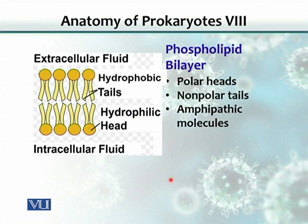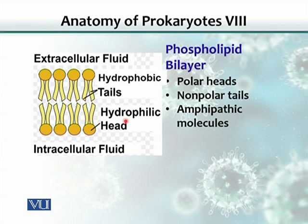In this slide, you can see the phospholipid bilayer and the individual phospholipid molecules. Each molecule has two parts: a head and a tail. The tail is hydrophobic — it hates water and loves fat. The head, on the other hand, likes water and is called hydrophilic. Given these properties, the hydrophobic tails of one layer face the hydrophobic tails of the other layer.